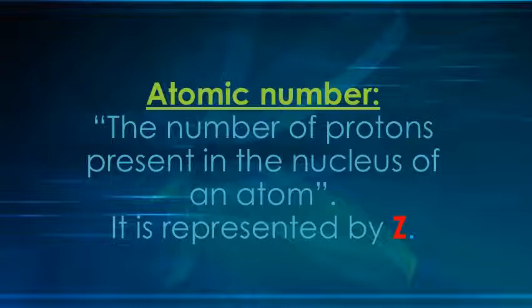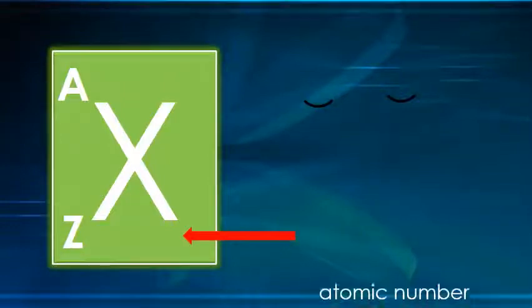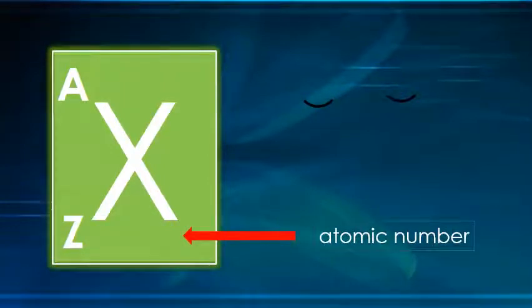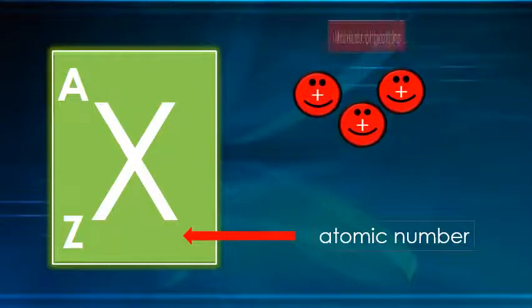What is atomic number? The number of protons present in the nucleus of an atom is called the atomic number. It is represented by capital Z. Here X denotes any element. The symbol Z tells us how many protons are present in the nucleus of an atom.